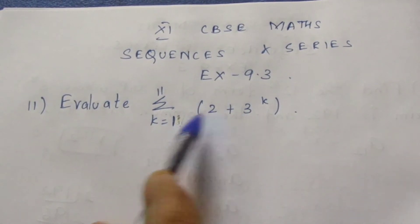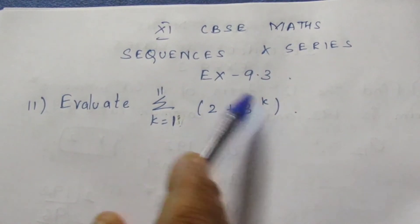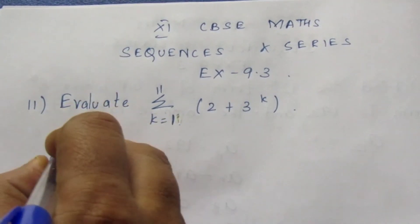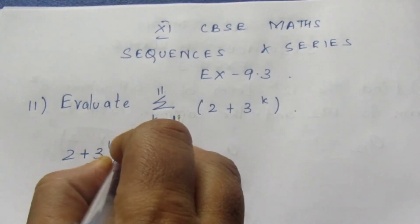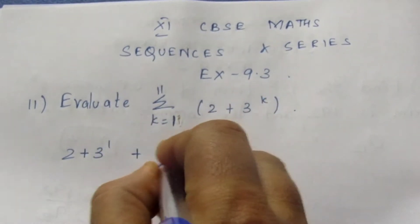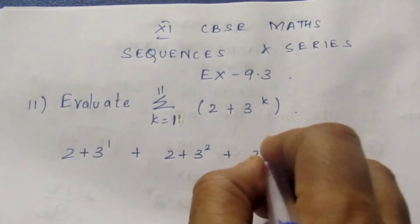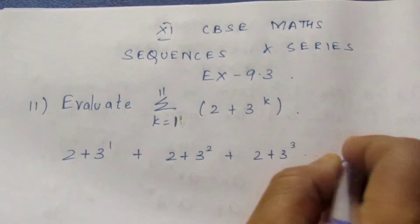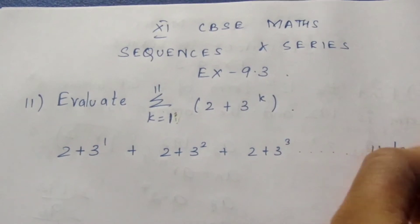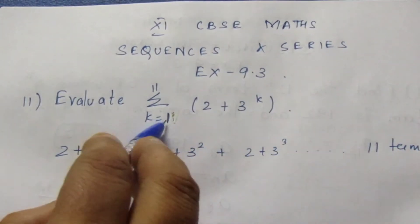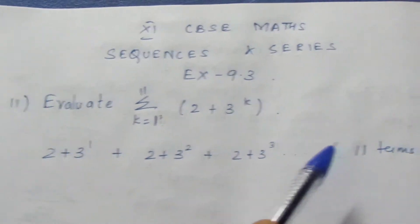Here we can substitute 1, 2, 3, 4 instead of k till 11. I can write this to be 2 plus 3 power 1, plus 2 plus 3 power 2, plus 2 plus 3 power 3, and so on till 11 terms, because from 1 we need to substitute till 11. We can write this till 11 terms.